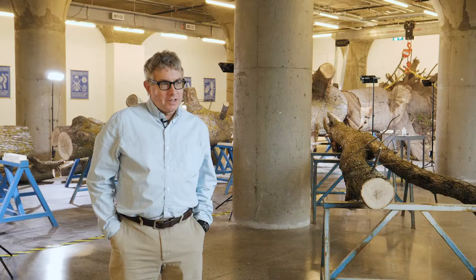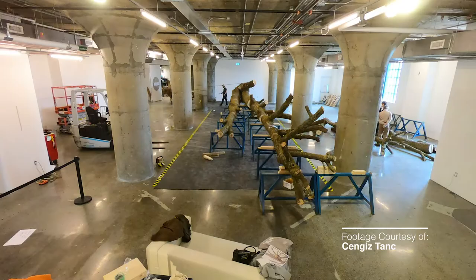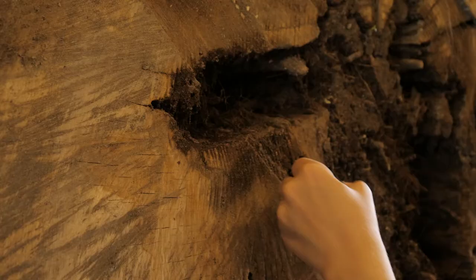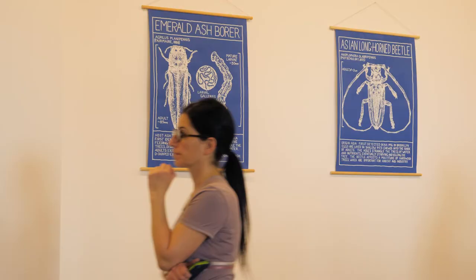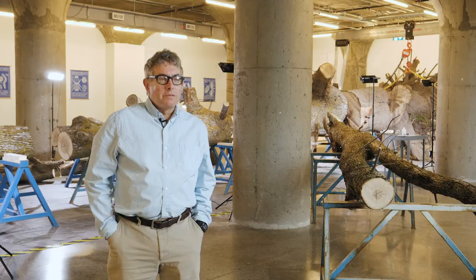This exhibition is called Life of a Dead Tree. It's a project in which we've brought an enormous dead ash tree into the galleries here at MOCA. Throughout the exhibition, the tree will be examined to find out what organisms live inside it. We're especially interested in an organism called the emerald ash borer, which is probably the organism that killed this tree.